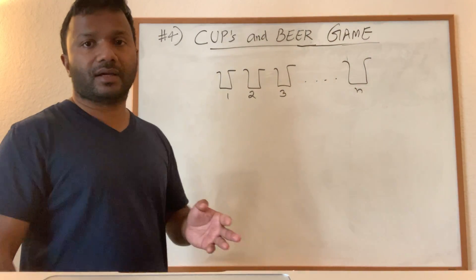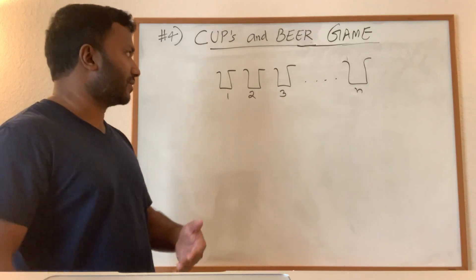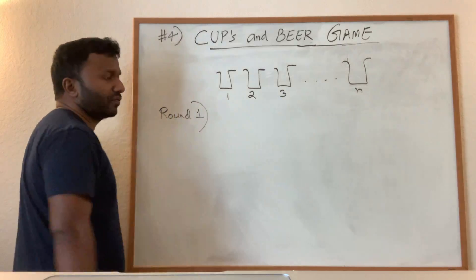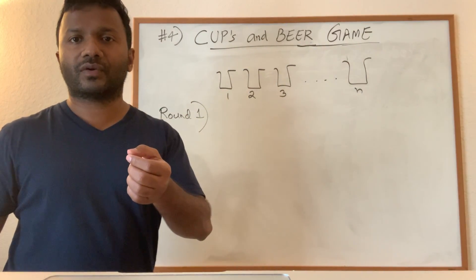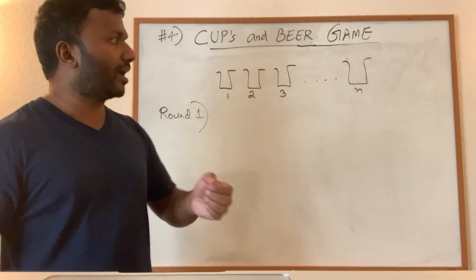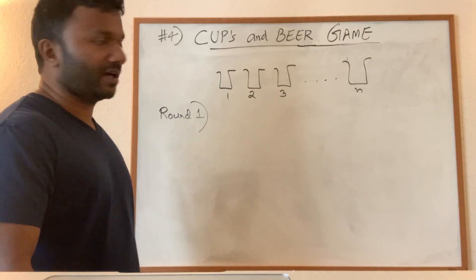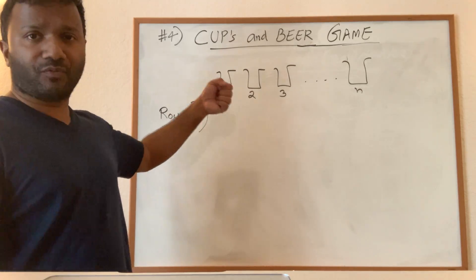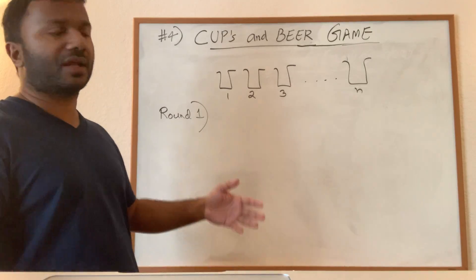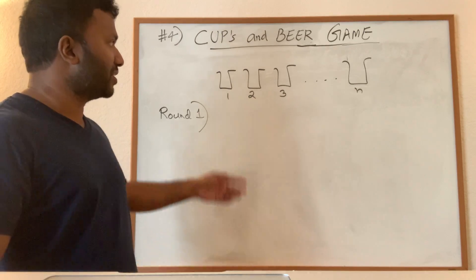This game is played in N rounds. In each round, you get to play first, then I play, then you play, then I play, and so on. In round one, you will be given one liter of beer and you are allowed to pour that one liter across the N cups — essentially distributing it in whatever way you like.